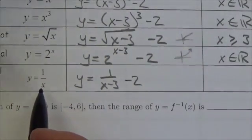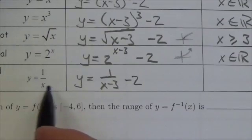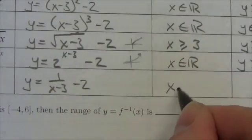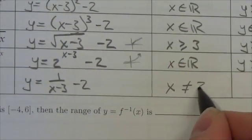So the domain here, instead of being x can't be equal to 0, will now be x cannot be equal to positive 3.